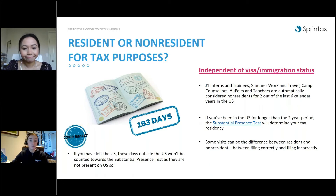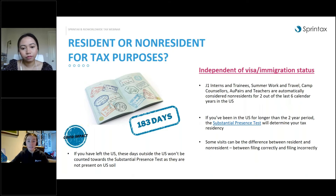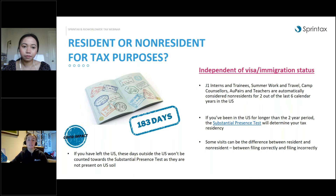A topic that tends to confuse a lot of J1 participants is residency for tax purposes. Importantly, residency for tax purposes is independent of your visa and immigration status. Generally, J1 interns, trainees, summer work and travels, camp counselors, au pairs, and teachers on J visas are considered non-residents for two out of the last six calendar years in the US. After those six years, the clock resets and you get another two years of non-resident status.